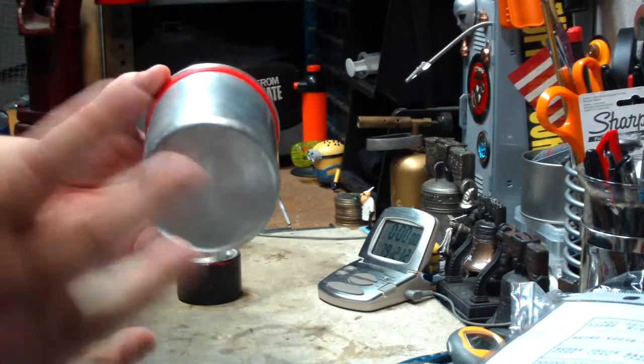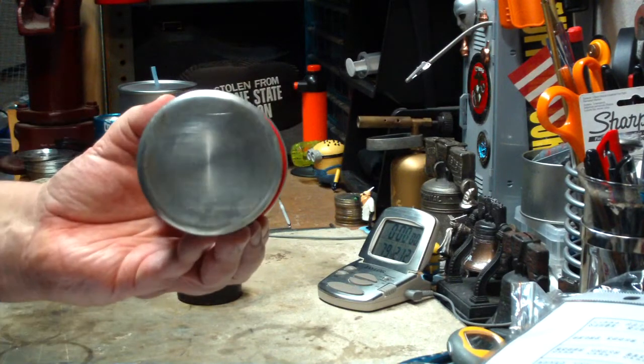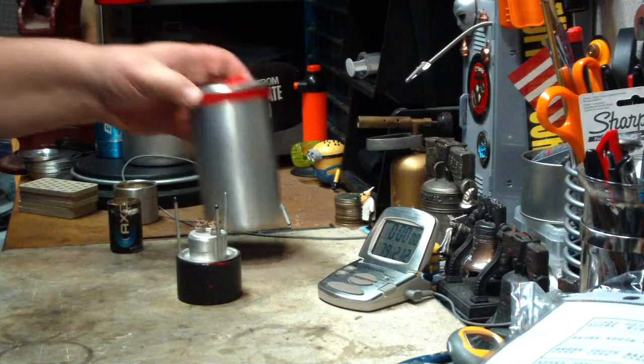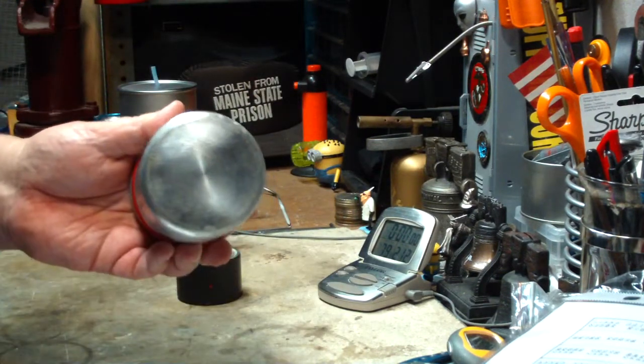One of the things that happens with this is it has a very small diameter across the bottom, so it doesn't give you a lot of surface for the alcohol stove to hit.